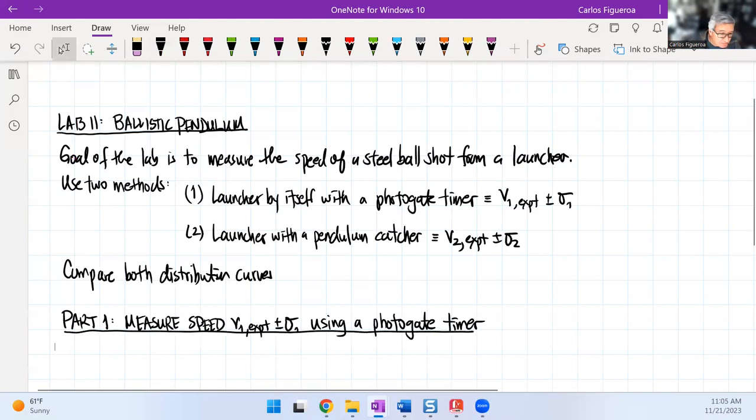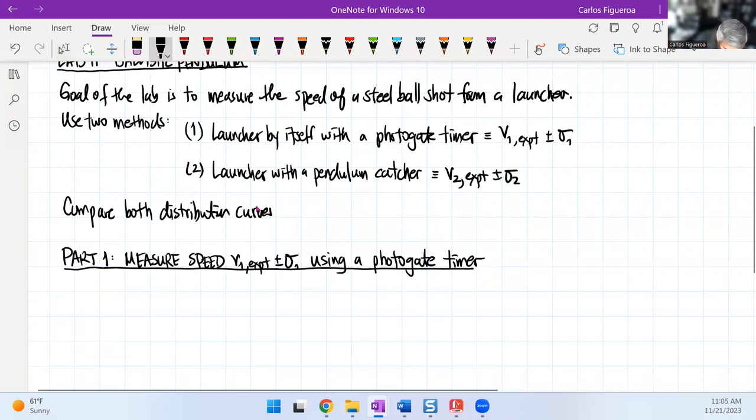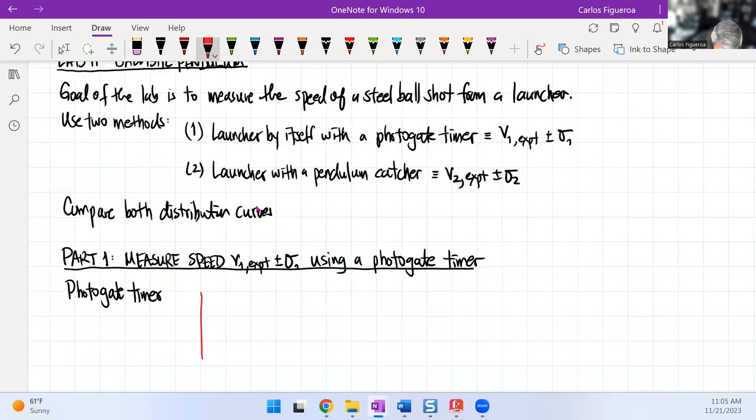So how do we do this? We've done this before. So as you may remember, when we talk about a photogate timer, we have a laser beam. This laser beam is being shot. And then we're going to shoot a ball through the laser. So as we shoot this steel ball here, it interrupts the beam by the diameter of the ball.